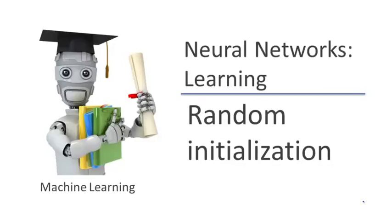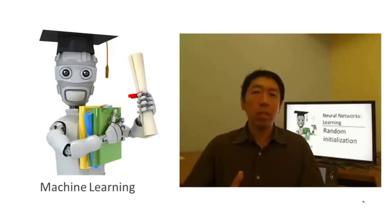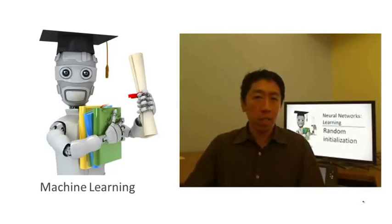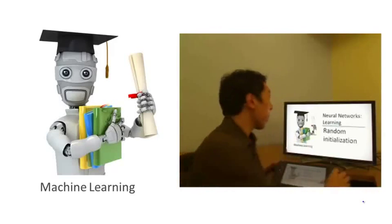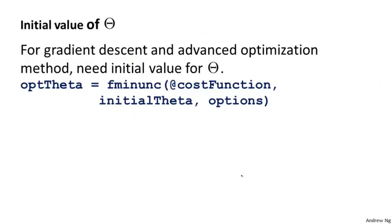In the previous videos, we put together almost all the pieces you need in order to implement and train a neural network. There's just one last idea I need to share with you, which is the idea of random initialization. When you're running an algorithm like gradient descent or the advanced optimization algorithms, we need to pick some initial value for the parameters theta.